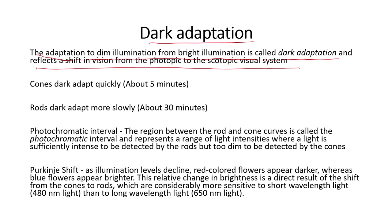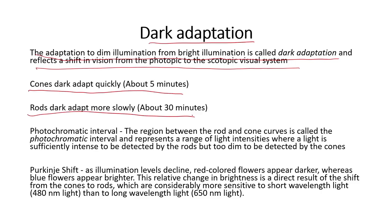Moving from bright light to dark is dark adaptation; the opposite is light adaptation. Cones dark-adapt very quickly — around 5 minutes. So coming out of a cinema hall you can see relatively quickly. But moving from brighter light into a cinema hall takes more time because that involves rod-based adaptation, which is dark adaptation proper. Rods dark-adapt more slowly — about 30 minutes. So after entering a cinema hall it takes more time to start seeing than when moving out into a brighter environment.